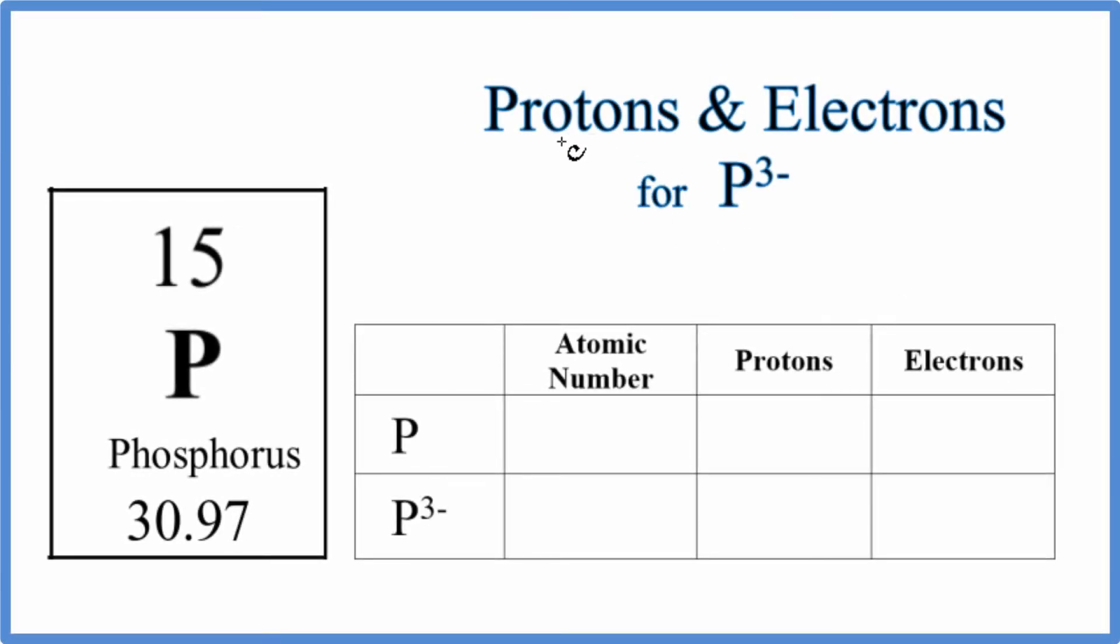In this video we'll find the number of protons and electrons for P3 minus, this is the phosphide ion, the phosphide anion. Before we do the P3 minus, let's look at phosphorus on the periodic table. You'll notice that phosphorus on the periodic table, this is a neutral element, we don't have a negative or a positive after it, it's neutral.